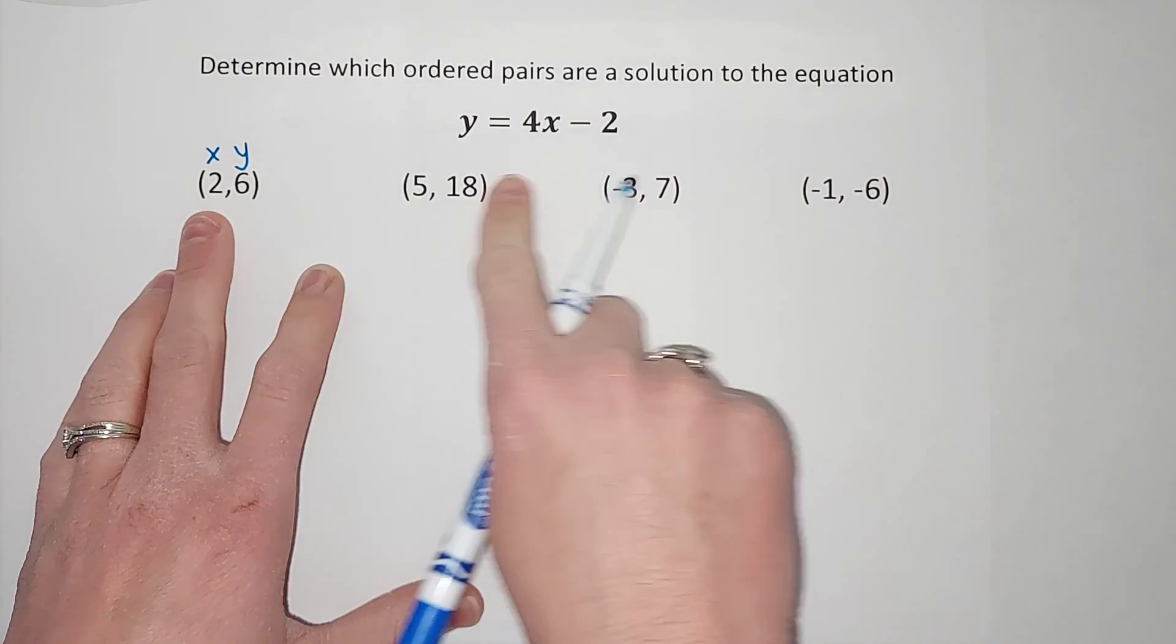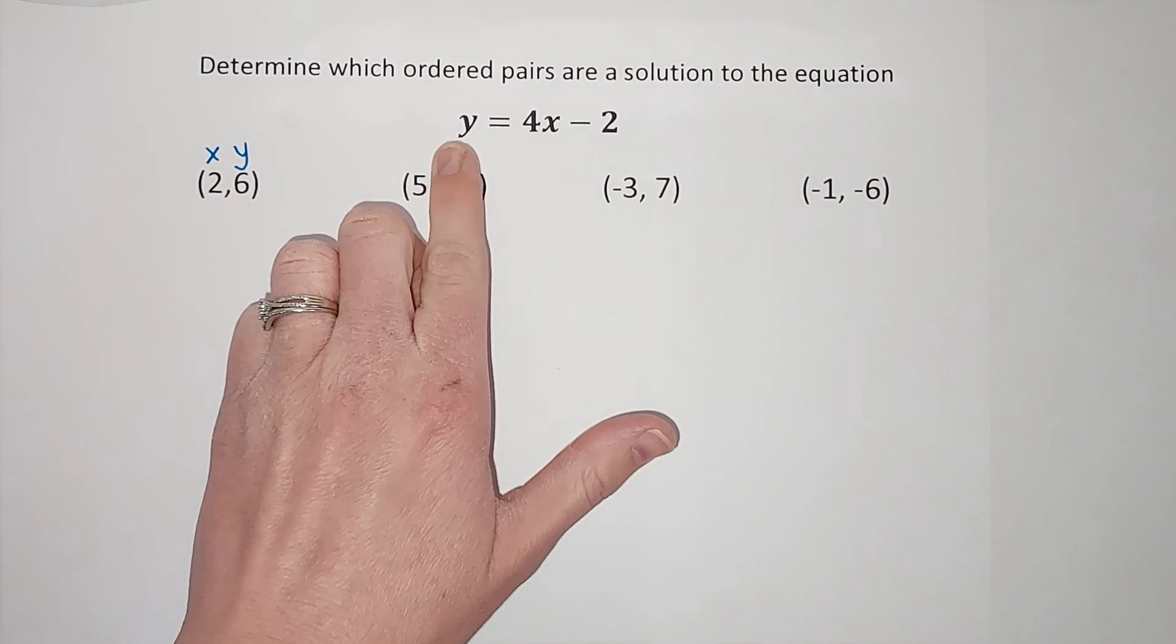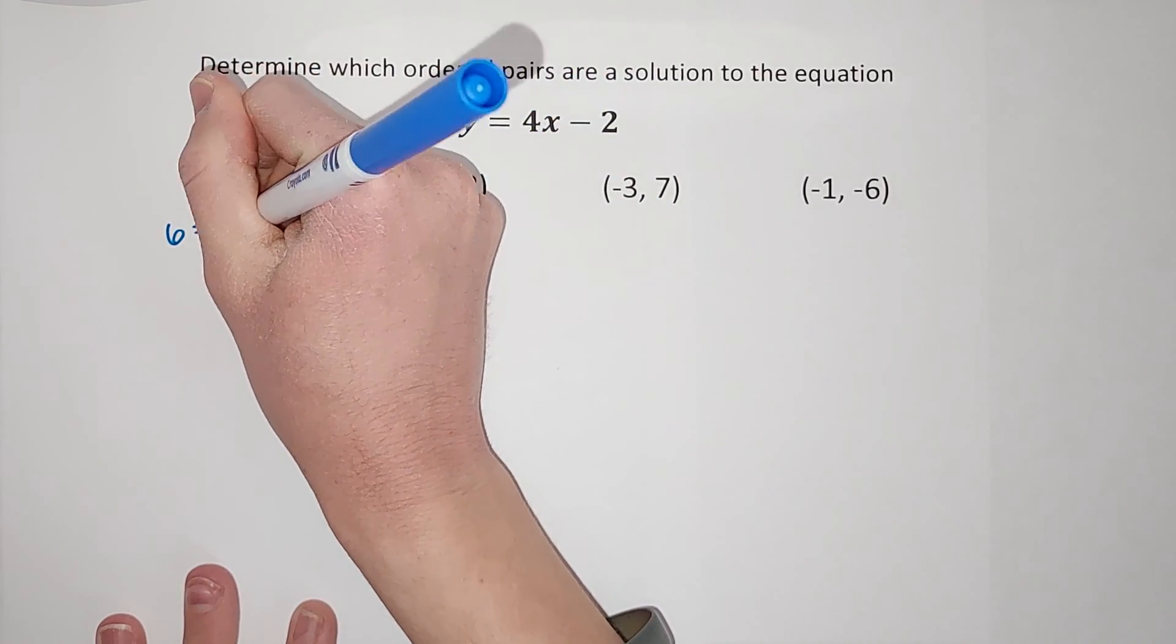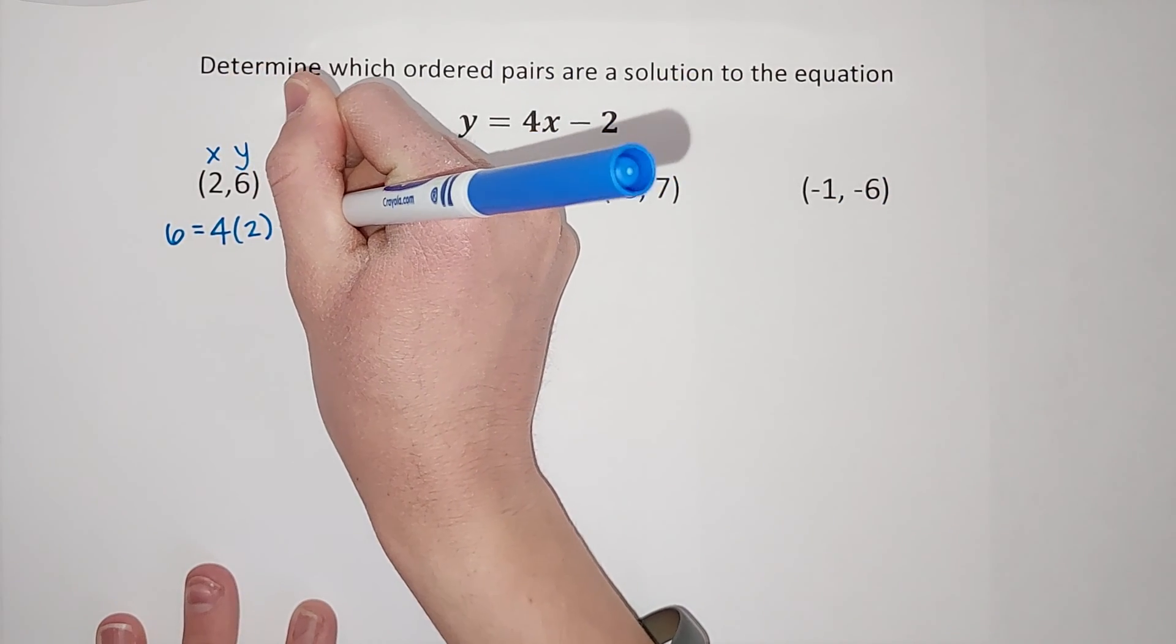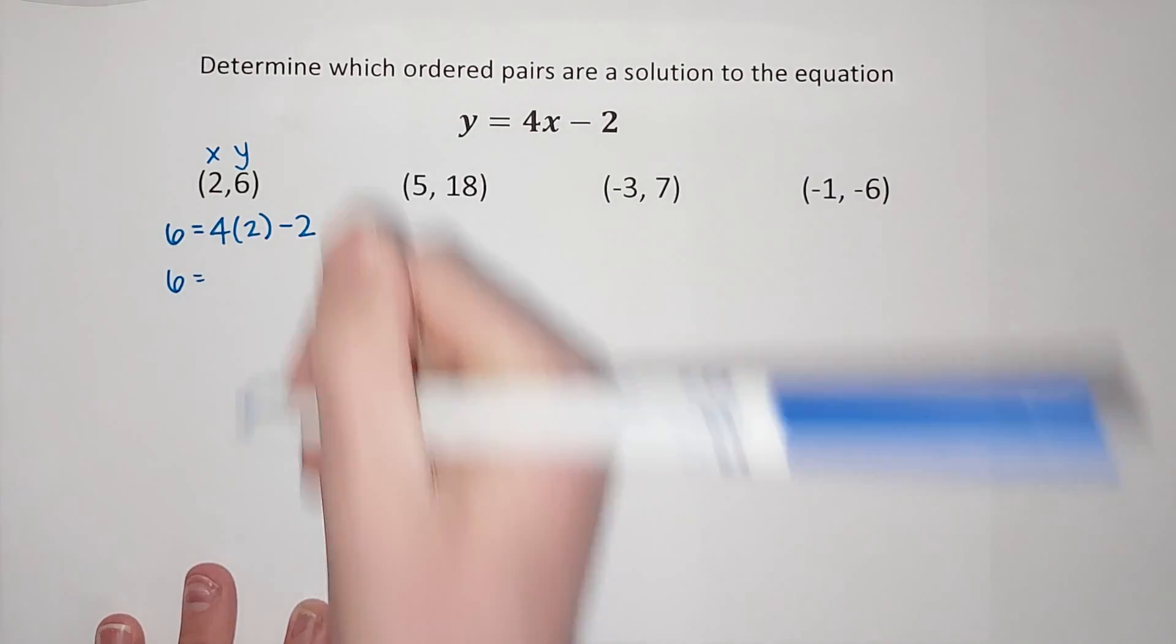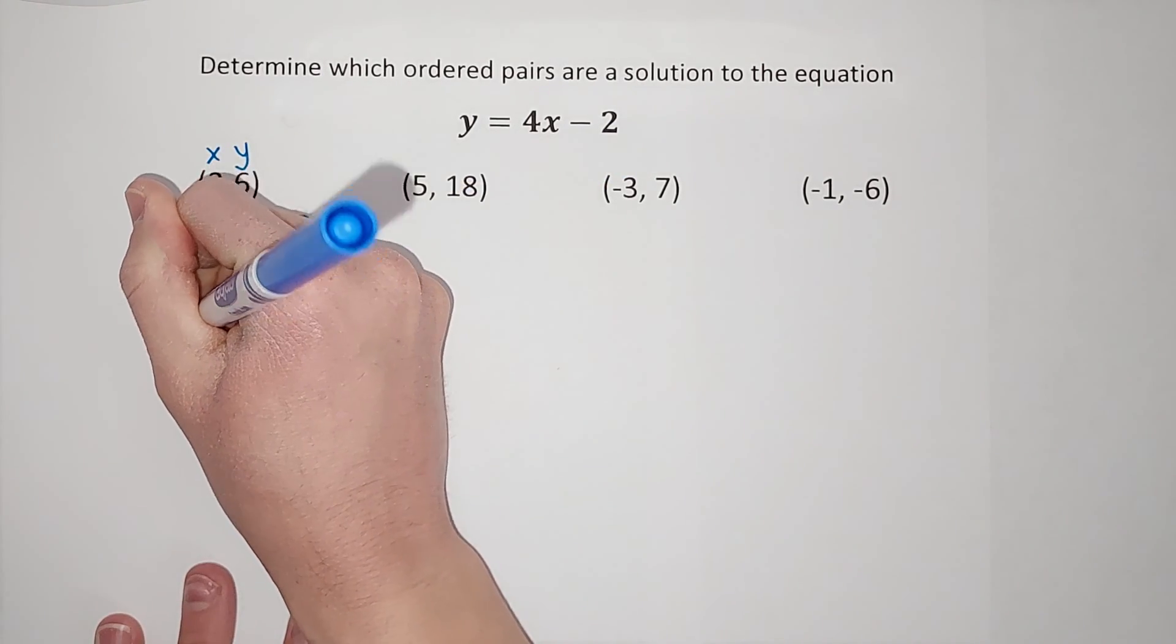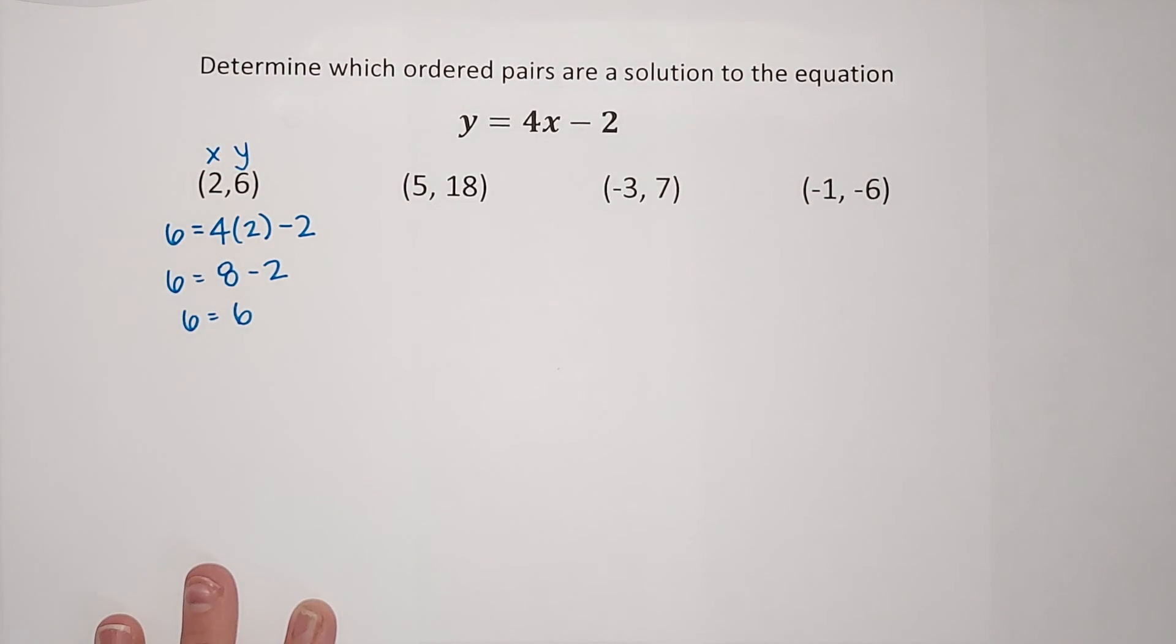So, to do that, we're going to plug in our first number for x, our second number for y, and see what happens. So, I've got y equals, so I'm going to write it as 6 equals 4 times x, which is 2, minus 2. Order of operations, I multiply first. So, I'm going to do 6 equals 4 times 2 gives me 8 minus 2. 8 minus 2 gives me 6. So, I end up with 6 equals 6, which is true.